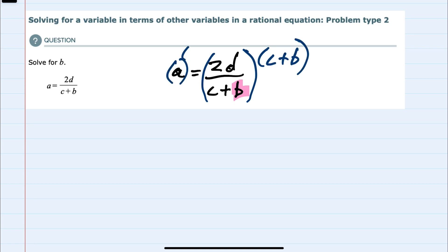Again, both on the left-hand side and the right-hand side. On the left-hand side, we can distribute the a times c plus b to be a times c and then plus a times b. And here on the right-hand side, the c plus b cancels the c plus b.